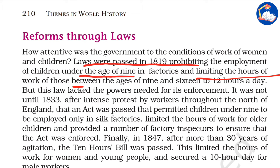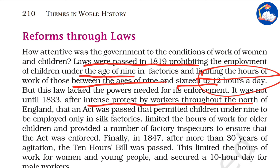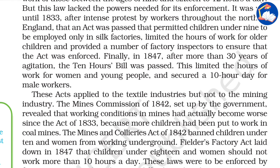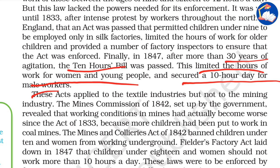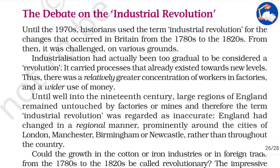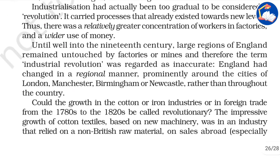Reforms eventually followed. Laws were passed in 1819 prohibiting the employment of children under the age of nine in factories and limiting working hours for those between ages nine and sixteen to 12 hours a day. After intense protest by workers throughout the north of England, an act was passed permitting children under nine to be employed only in silk factories, limiting hours for older children, and providing factory inspectors to ensure the act was enforced. After 30 years of agitation, the Ten Hours Bill was passed, limiting the hours of work for women and young people and securing a ten-hour day for male workers.